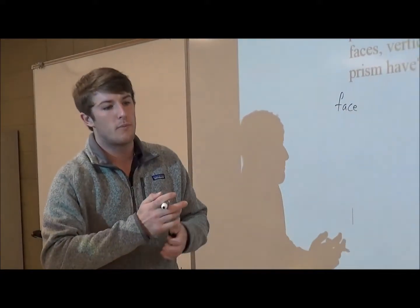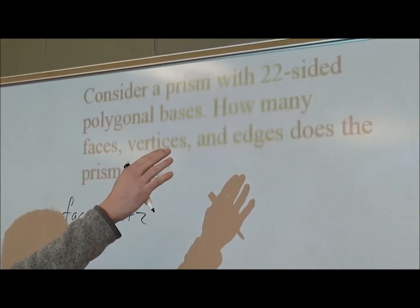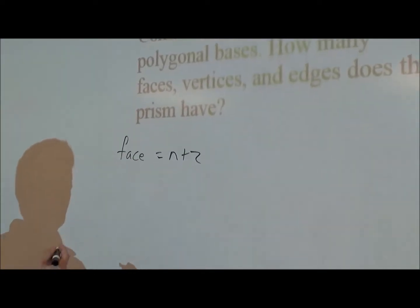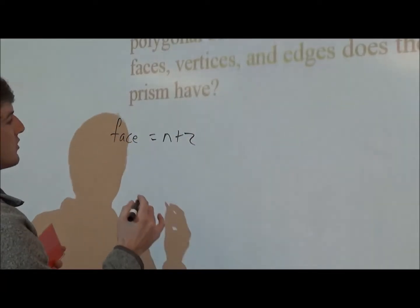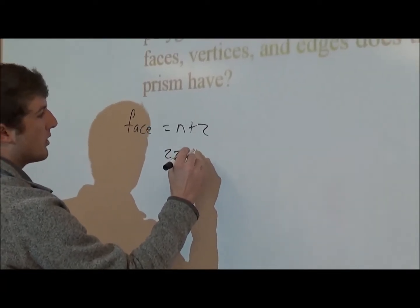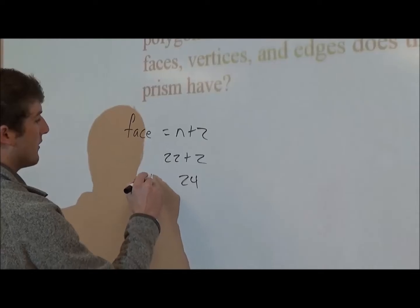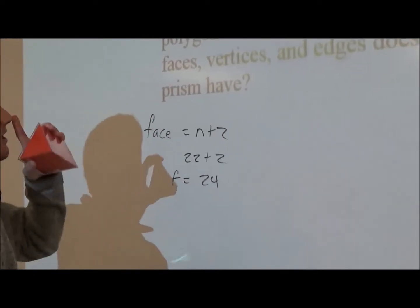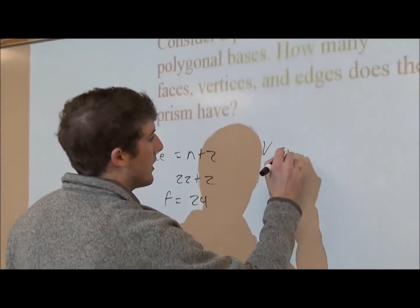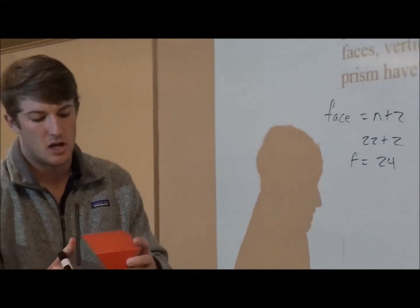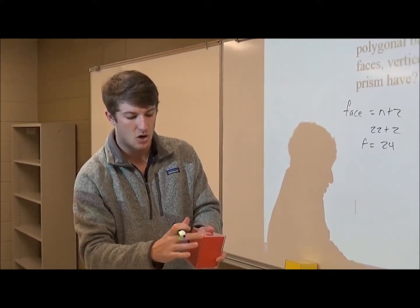We've come up with a rule that can be applied to any number of sided polygon — it could be 100, it could be 200 — and that rule for faces is n plus 2. Since this polygon is 22-sided, n stands for the number of sides, so it'll be 22 plus 2, giving us 24 faces.